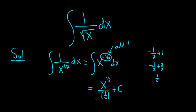Now when you divide by 1 half, you really multiply by the reciprocal. So it's really 2 over 1 times x to the 1 half. But 2 over 1 is just 2, so we get 2 x to the 1 half plus c.